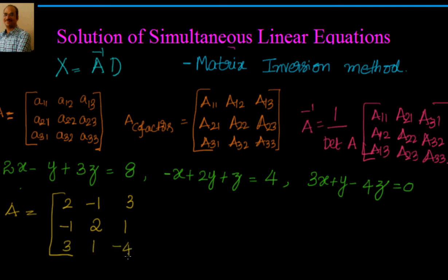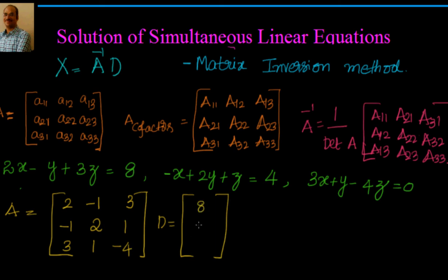And D is the constants column vector with entries 8, 4, and 0. So we have D clearly identified as well.